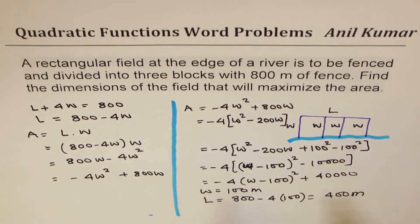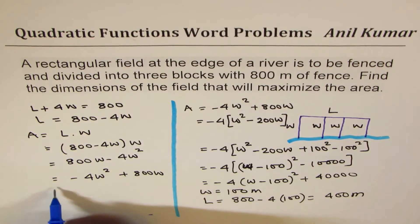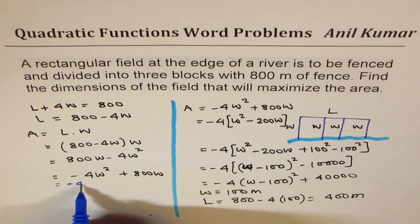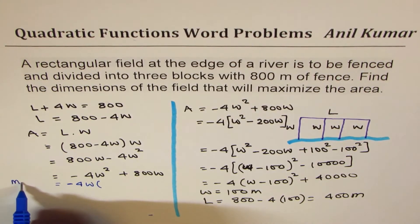As I was saying, you could also solve it using factoring. Let me show you that. If I factor minus 4W here, what do I get? Let me call this alternate method, method 2.